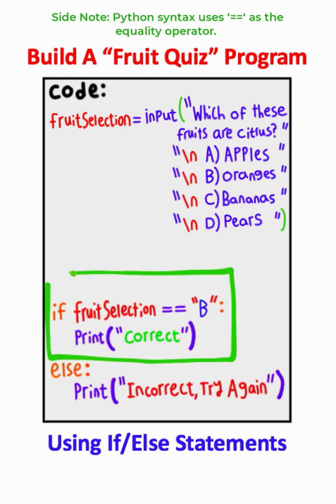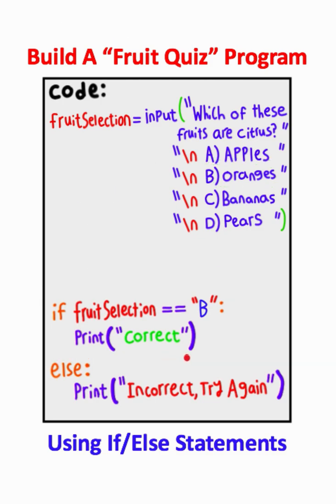If the user types in option B, oranges are the only citrus fruit on this list, then they will get the answer correct. If the user picks anything else, they will be incorrect and have to try again.